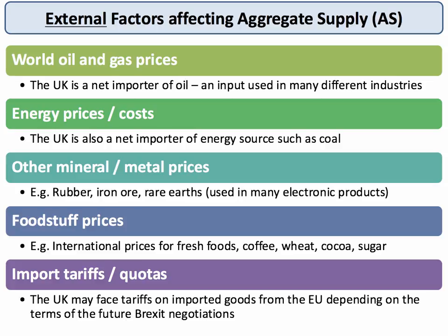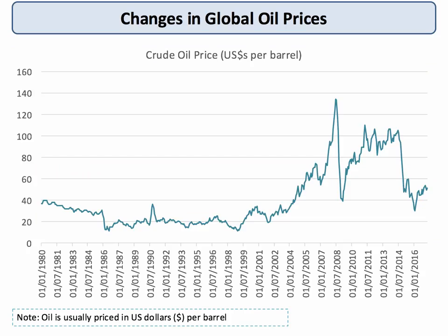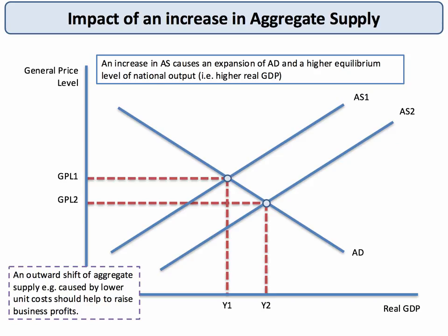Understanding external factors affecting aggregate supply is incredibly important for getting good exam answers. Here's a good example: the world price of oil in dollars per barrel was fairly flat through most of the 1980s and early 1990s, but in the last ten years there have been several peaks and collapses. The price is currently around $50–$60, but the key point is that the dollar price of oil is quite volatile and therefore unpredictable.